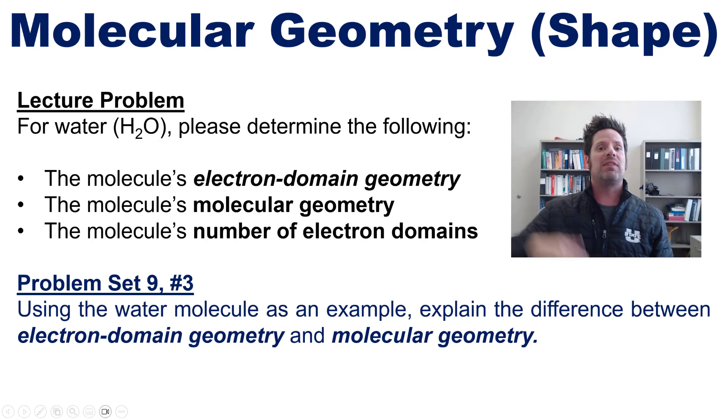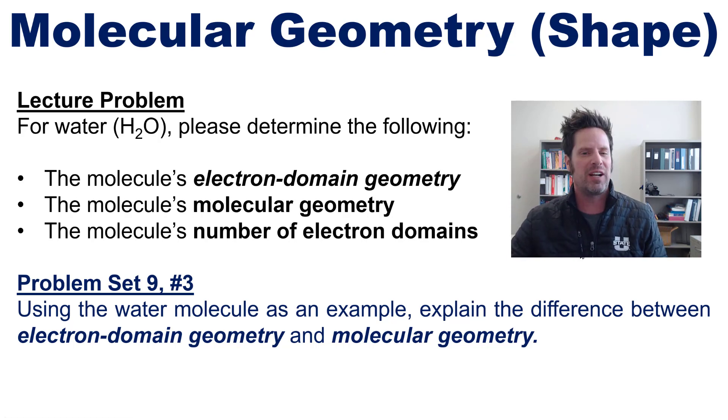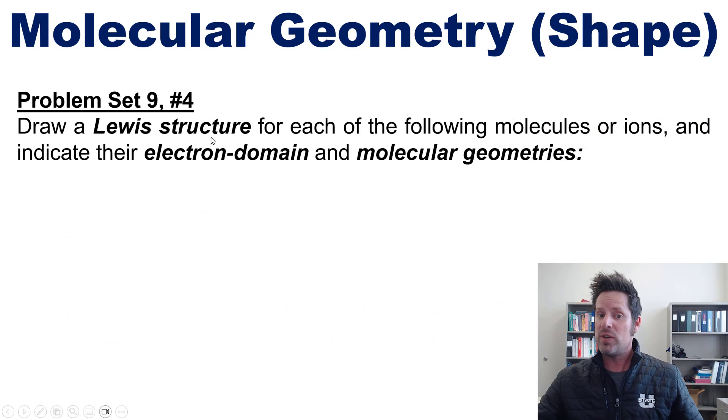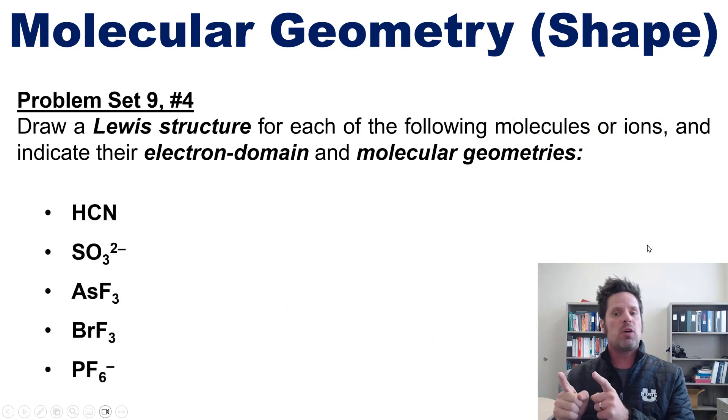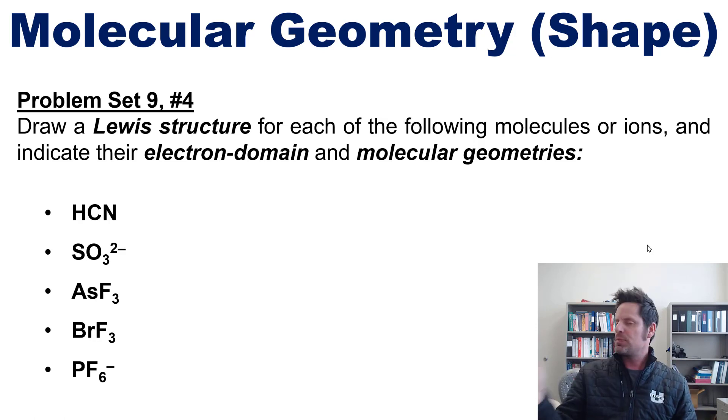Now, if it's any help, I'm going to have a link in the description below to a separate video in which I answer some, if not all, of these questions, which takes us to our final question for this video. Please draw a Lewis structure for each of the following molecules or ions and then indicate their electron domain and molecular geometries. As per usual, I invite you to try this on your own and then you can click the link in the description below, which will take you to a separate video in which I do some of these, not all, but some of them for you.